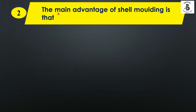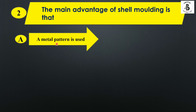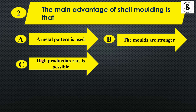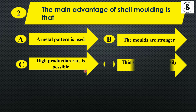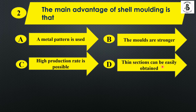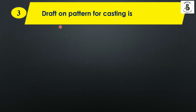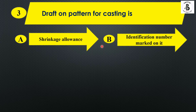The next question: the main advantage of shell molding is that — option A: a metal pattern is used; option B: the molds are stronger; option C: high production rate is possible; option D: thin sections can be easily obtained. The main advantage of shell molding is that thin sections can be easily obtained, so the right answer is option D.